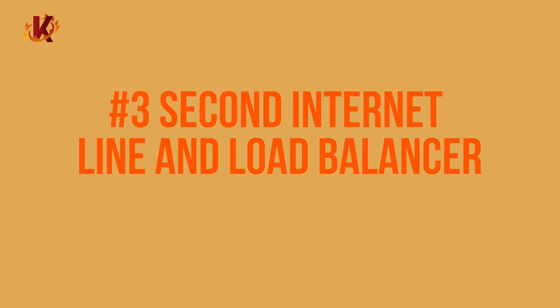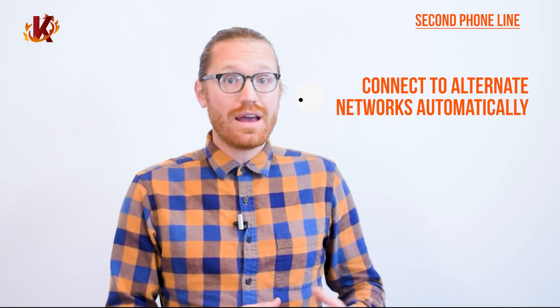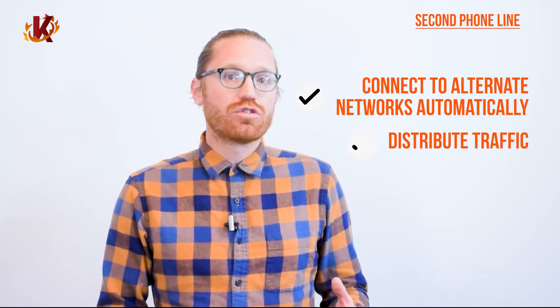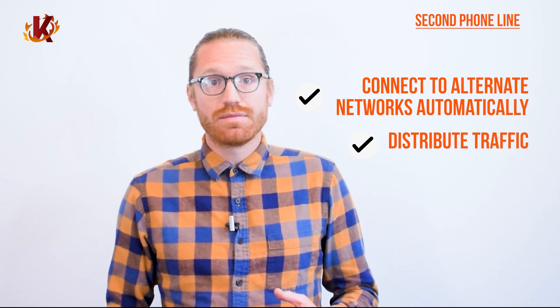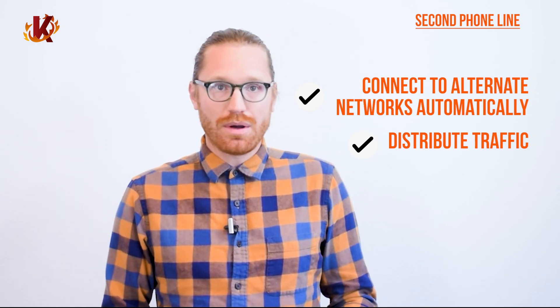To maintain a higher connection speed, you can also get a second internet line and load balancer. These days, it's surprisingly easy and affordable to add a second line. Retailers can typically do so for under $50 a month. This allows your terminal to connect to the other network automatically anytime one is offline. Additionally, a load balancer helps distribute any traffic going through your networks. This increases the overall speed and ensures you have the fastest transaction time possible.